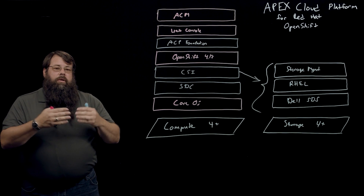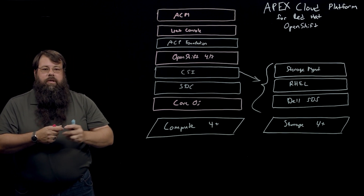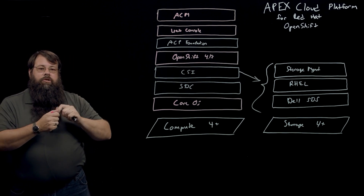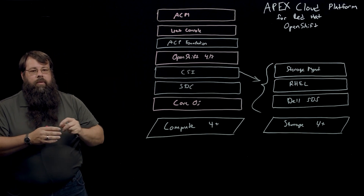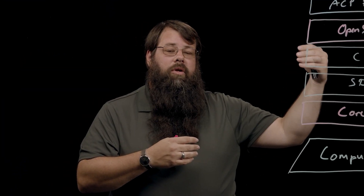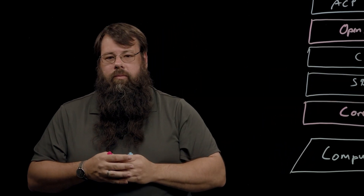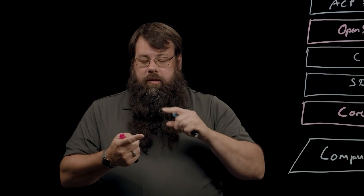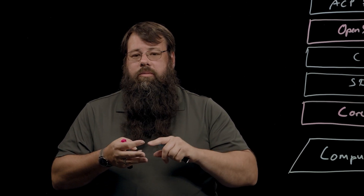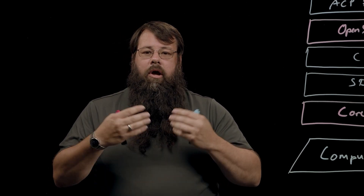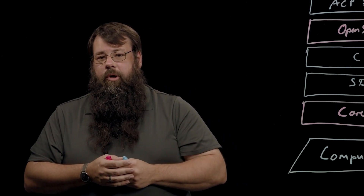That gives you the ability to provision persistent volume claims right from within OpenShift. It talks directly to the storage through the CSI layer and will actually provision the volumes on the storage layer for you. You can provision volumes, delete volumes, and snapshot those volumes, all from within OpenShift using YAML.